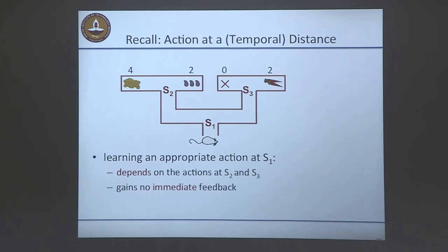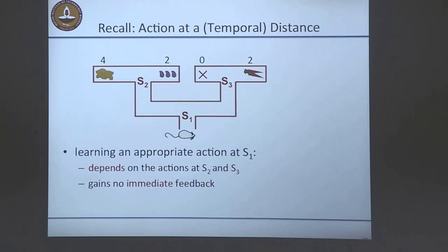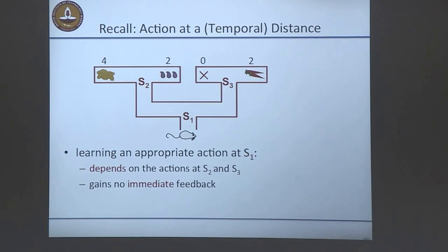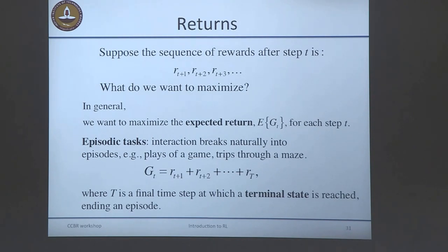The goal of the agent is to learn a sequence of actions that get as much reward as possible in the long run. The tricky part is that even though you're learning an action at s_1, it depends on actions further down the line, and there's no immediate feedback. So we maximize what we call a return. For episodic tasks, the return is simply the sum of rewards until you hit a terminal state — like the mouse reaching the cheese. For every trajectory you generate, you get a return.